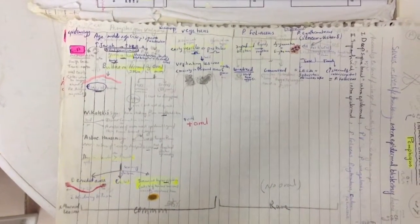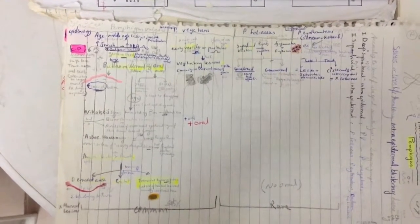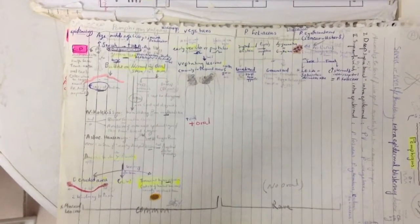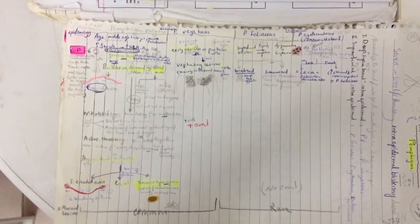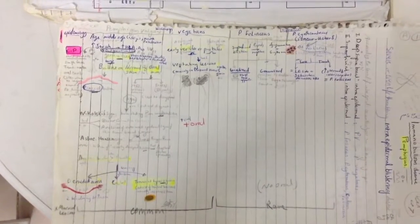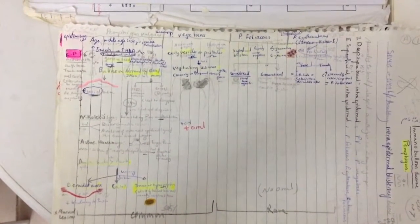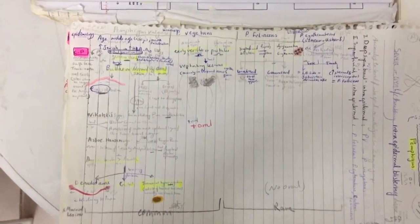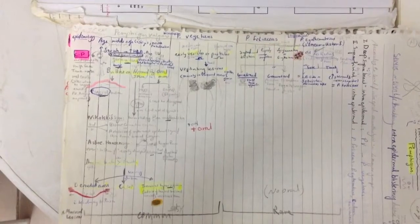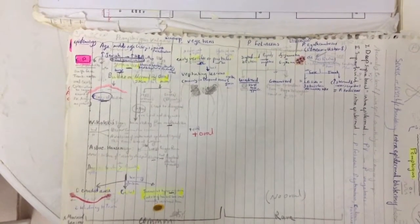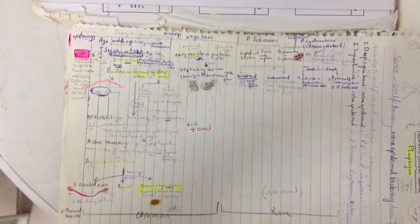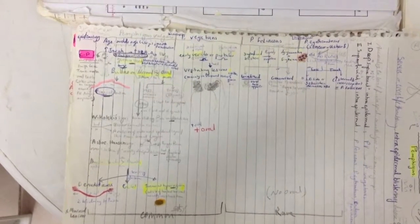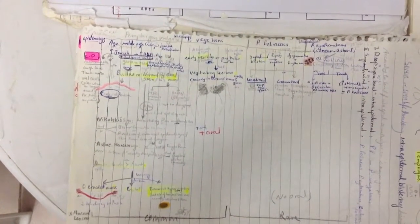In 50 to 70% of cases, the mucous membrane is the first symptom to appear. Oral mucosal affection occurs in pemphigus vulgaris and vegetans, and is rare in pemphigus foliaceous and erythematosus. So there are oral lesions in pemphigus vulgaris and vegetans, and no or rare oral lesions in pemphigus foliaceous and erythematosus.